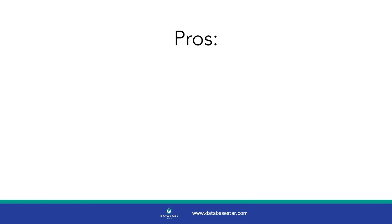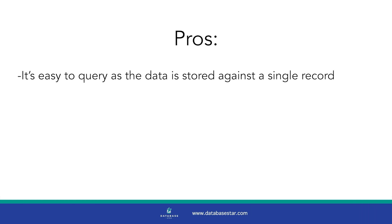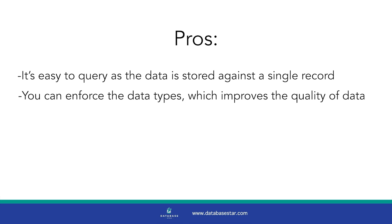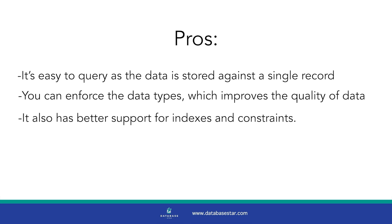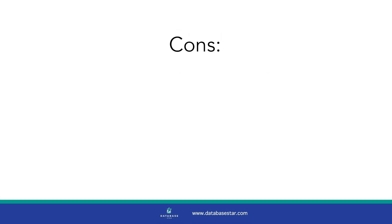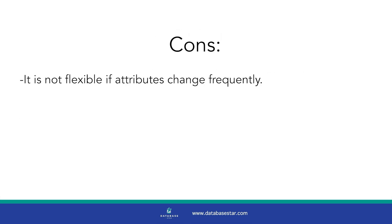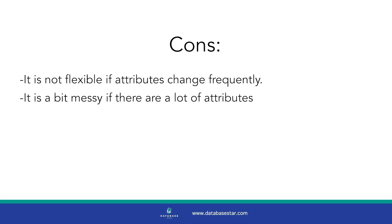There are a few benefits to this option. It's easy to query as the data is stored against a single record. You can enforce the data types, which improves the quality of data. It also has better support for indexes and constraints. The drawback to this design is that it is not flexible if the attributes change frequently. It may also feel a bit messy if there are a lot of attributes — your table may end up having 50 columns, for example — but the database can handle it.